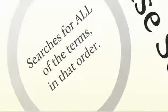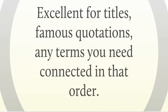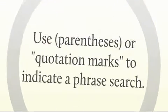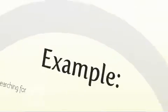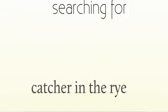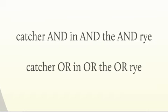Phrase searching is another important tool. This searches for all of the terms in the order you enter them. It's excellent for titles, famous quotations, and any terms that you need connected in the order that you enter them. You use parentheses or quotation marks to indicate a phrase search. For example, if you're searching for 'catcher in the rye' entered just like that without phrase markers, it's going to retrieve something imprecise — you'll get a lot of irrelevant search results.